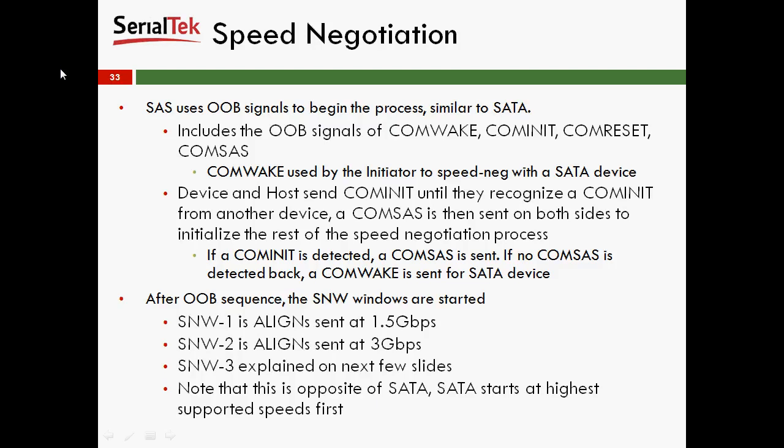If a COM-Init is detected, a COM-SAS is sent. If no COM-SAS is detected back, a COM-Wake is then sent, just in case it's a SATA device. After the OOB sequence, the SNW windows are started. SNW stands for speed negotiation windows. SNW-1 consists of lines sent at 1.5 gigabits per second. SNW-2 is lines sent at 3 gigabits per second. SNW-3 will be explained on the next few slides.